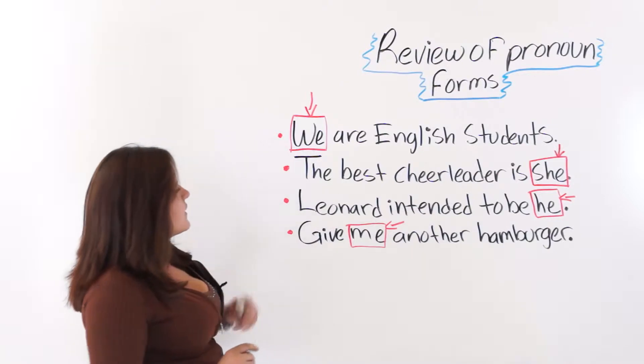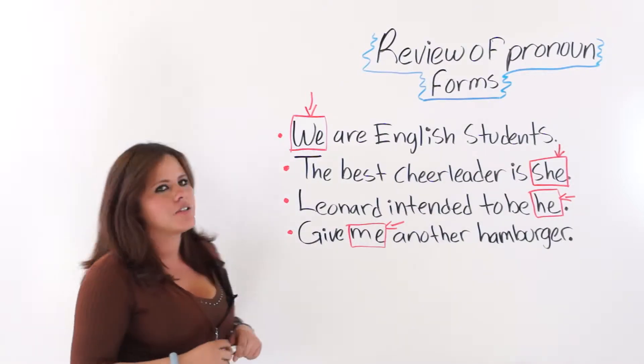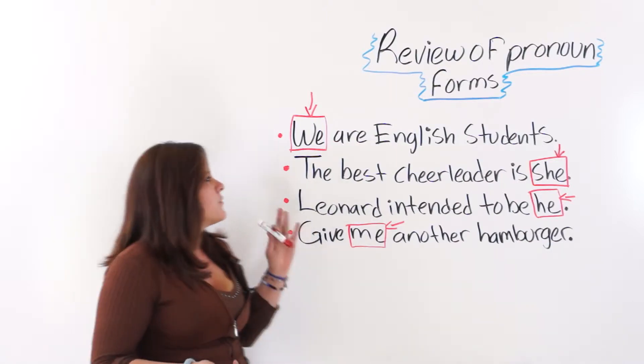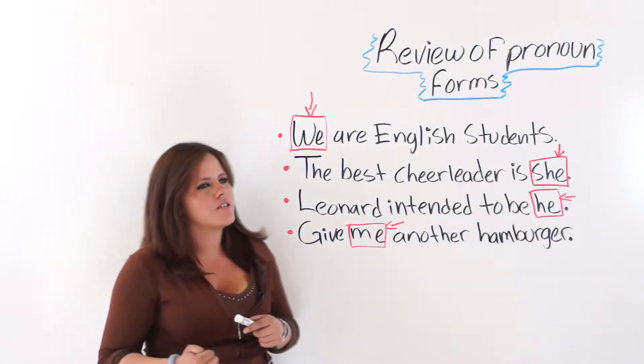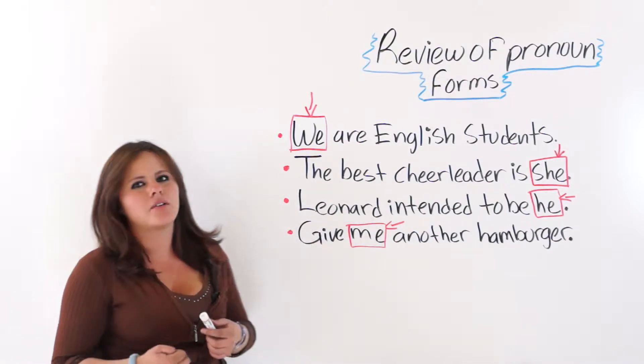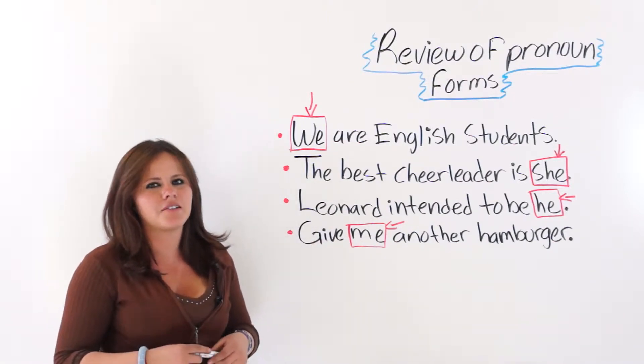As you can see, I highlighted the four pronouns I am using in these four different statements. The first one says, we are English students. We is a personal pronoun, a subjective personal pronoun, actually.